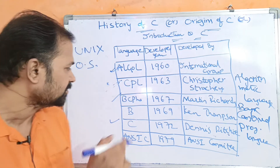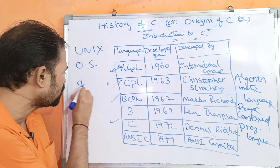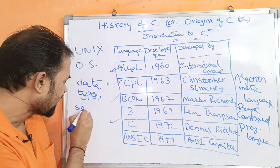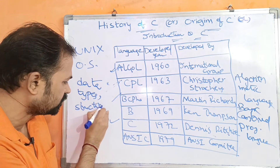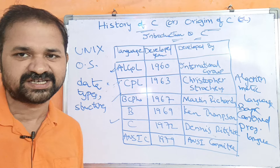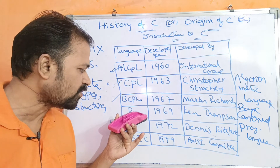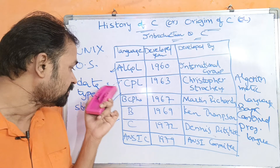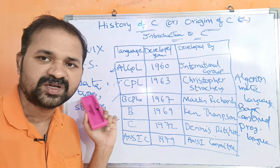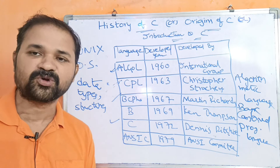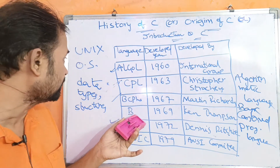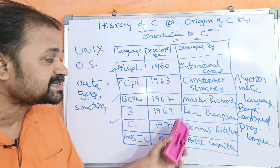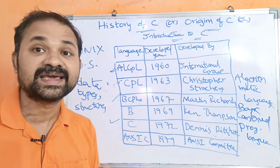But B doesn't support data types and structures. So in order to overcome these drawbacks, C was developed. B was developed to write the Unix operating system, and Unix operating system was developed by Ken Thompson.